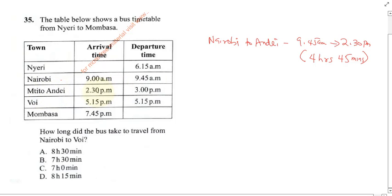At Athi, arrival time is 2:30 and departure time is 2:30, so at Athi it will spend extra 30 minutes. Then from Athi to Voi, this is going to be 3 p.m. to 5:15 p.m., so this is going to be a journey of 2 hours and 15 minutes.